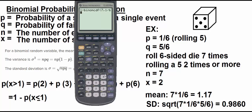Still rolling the die seven times. Likelihood of its success each time is still one out of six. And I'm now looking at one or less. So I'll do comma one, hit enter, and get about 33%.